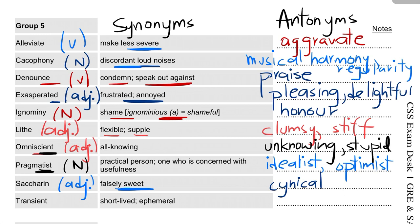The last word for today is 'transient', which is also an adjective. It means short-lived or ephemeral. Its antonyms are 'permanent' or 'eternal'.